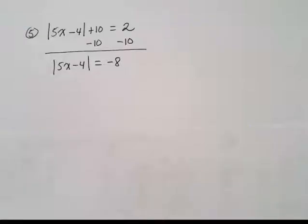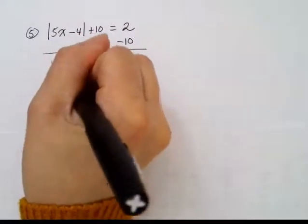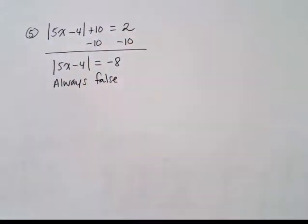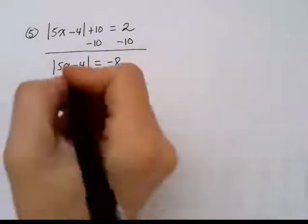So if we are looking at a statement that tells us that absolute value is equal to some negative value, well that statement is never going to be true. So this is always false by the definition of absolute value. Absolute value can't be negative.